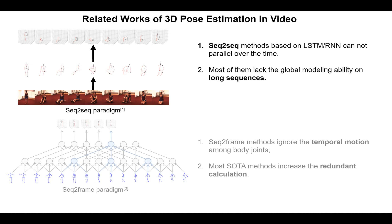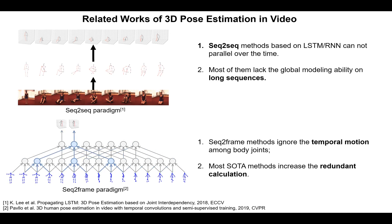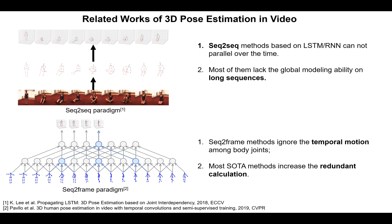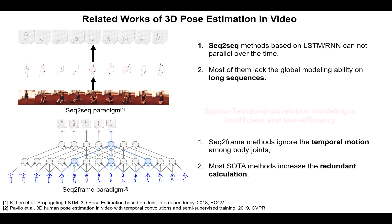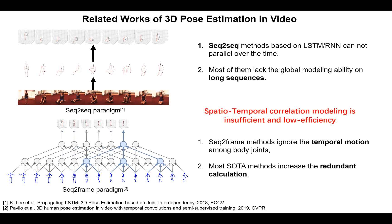Related works on 3D pose estimation in video can be categorized into seq-to-seq and seq-to-frame paradigms. The former methods based on LSTM or RNN cannot parallelize over time, and most of them lack global modeling ability on long sequences. While seq-to-frame methods ignore temporal motion among body joints, most such methods increase redundant calculation. Therefore, current spatio-temporal correlation methods are insufficient and low efficiency.